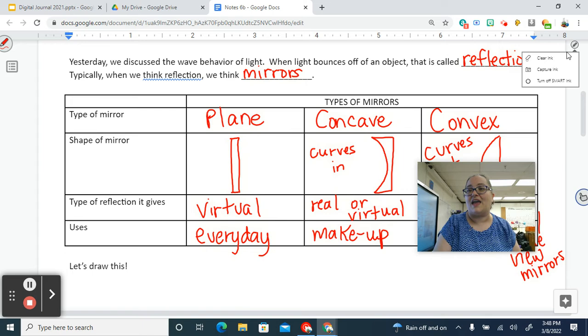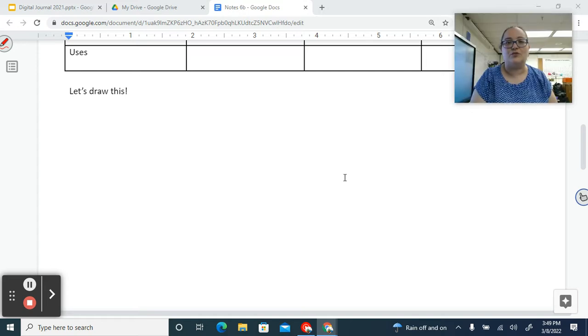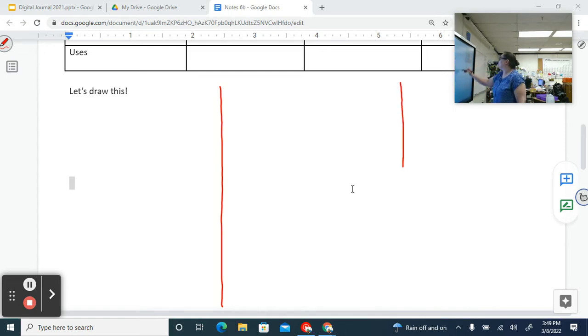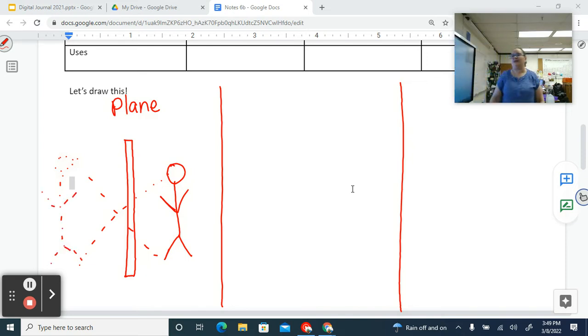Alright. So now we're going to draw what the angles of incidence and reflection are for each of these types of mirrors. So you've got some room down here at the bottom of your paper to do this. So we're going to divide the paper up into three pieces. If you are doing this from home, you might want to open up canvas and create a canvas drawing and then insert it. So we're going to start with the plane mirror. We know that the plane mirror is the flat everyday mirror. So when I stand on this side, I have me on the other side, but I'm not really over there on the other side. It just looks like I am.